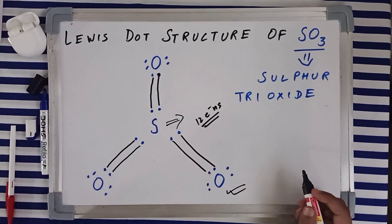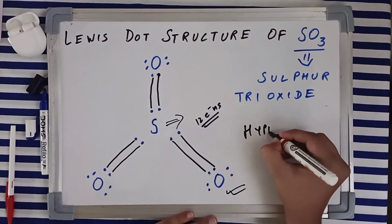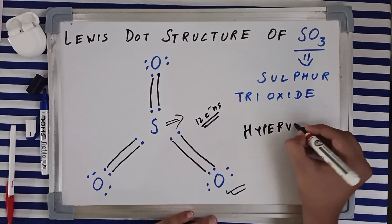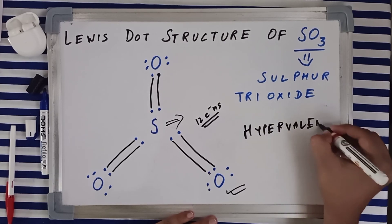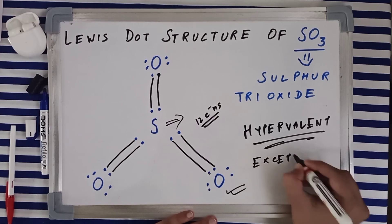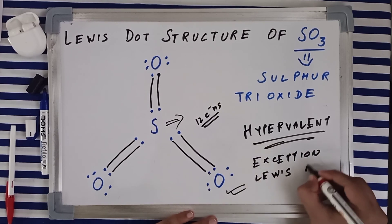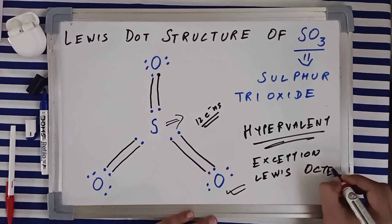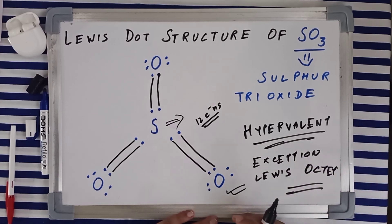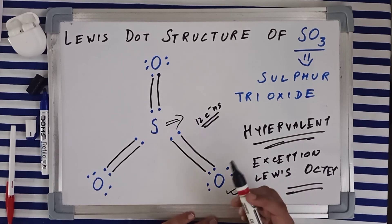Which means SO3 is a hypervalent molecule and obviously it is an exception to Lewis octet rule. So this is the structure of SO3, sulfur trioxide. Thank you for watching, and I'll see you guys in the next video.